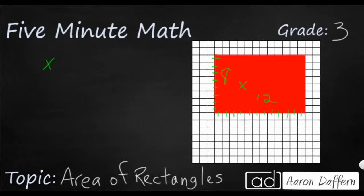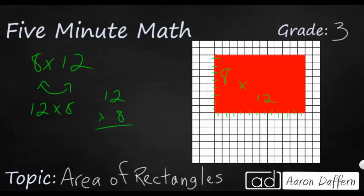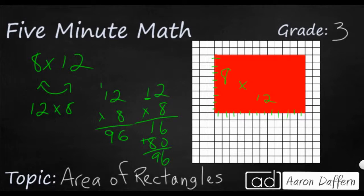Some of you might know 8 times 12 as a fact. If you don't, I'm going to use the commutative property and flip the order of my factors, making it 12 times 8. First, we multiply 8 times 2 — that's 16, carry the 1. Then 8 times 1 is 8, add that 1 back in, giving 96. You can also do partial products: 8 times 2 is 16, and 8 times 10 is 80. Either way, you get your answer of 96 square units.